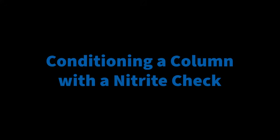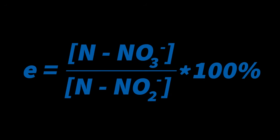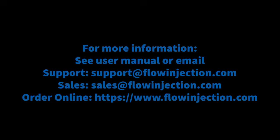It is recommended to run a quick conditioning run followed by an efficiency check after installing a new column. To do this, simply run 10 injections of your highest standard, followed by your nitrate to nitrite checks. Efficiency is calculated by dividing the nitrate response by the nitrite response. Generally, you want to see an efficiency of 90% or higher.